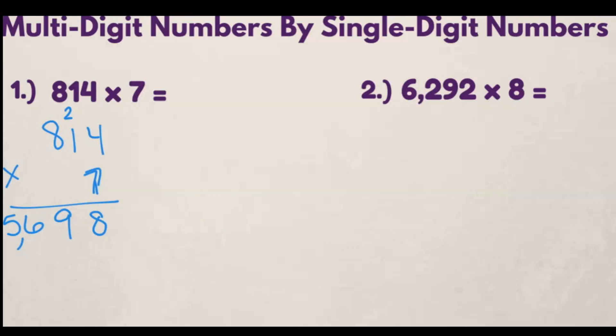So let's walk through another example with a little bit bigger number. So what is 6,292 times 8? So let's set it up first by putting the larger number on top, 8 on the bottom.